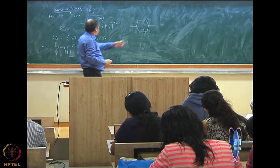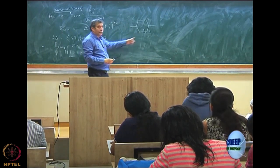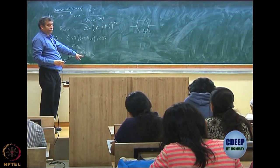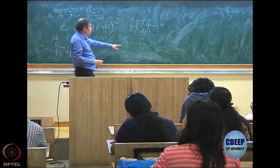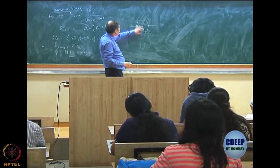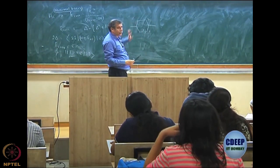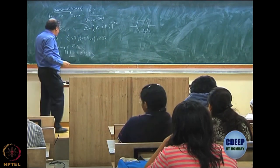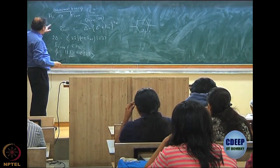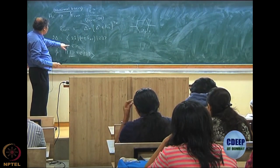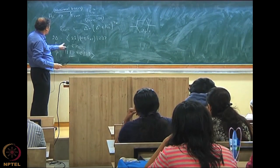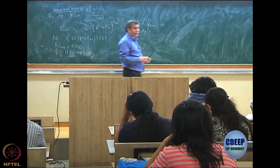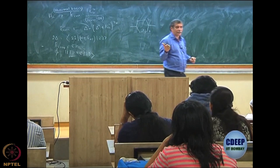Our wave function then is |11 bar> plus a constant times |22 bar>. This is my Hartree-Fock, and |22 bar> is the other configuration. We have to calculate C and put it back. E-correlation is C times K12. That is what we showed last time from the double CI equation.